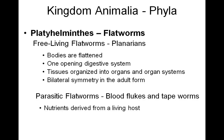Next, we have Platyhelminthes, my flatworms. We have free-living flatworms and also parasitic flatworms. My free-living flatworms, the planarians — we see their bodies are flattened, they have a one-opening digestive system, tissues are organized into organs and organ systems. So we're seeing where we're becoming more elaborate in the animal structure, and also bilateral symmetry in the adult form. My parasitic flatworms would be the blood flukes and tapeworms — these parasitic flatworms are going to derive their nutrients from a living host.